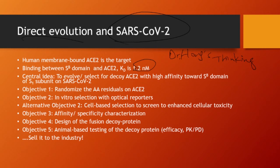The central idea is to evolve or select for a decoy ACE2 with higher affinity to the SB domain of the S1 subunit on SARS-CoV-2 — so that when the virus sees this decoy protein, it would bind to the decoy and not to the cell. Giving ACE2 alone is not enough, in my opinion, because why would the virus prefer binding what you give versus what is on the cell? We need to give them something better — something they like much more. We need to give them a bigger fish than the cell.